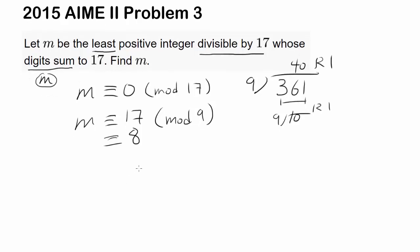So let's continue. And since 17 and 9 are relatively prime, which means they do not share any common divisors, you can figure out what m is. There is one unique value for m in mod 17 times 9. And 17 times 9 is 153. And this is directly from Chinese remainder theorem.